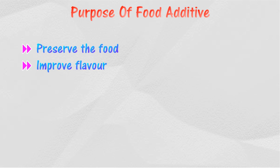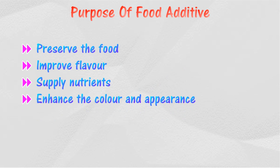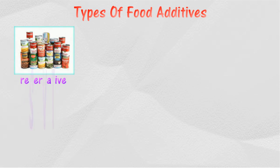Food additives also help in enriching food with certain nutrients. They make food look more attractive by enhancing the color and appearance of food. Food additives can be classified according to their function. There are several types of food additives. Preservatives are substances added to food to slow down or prevent the growth of microorganisms.